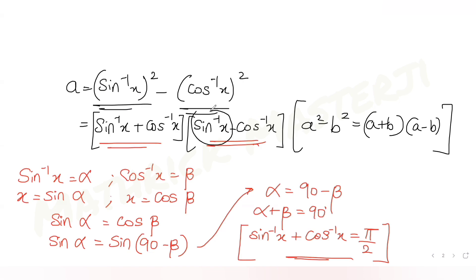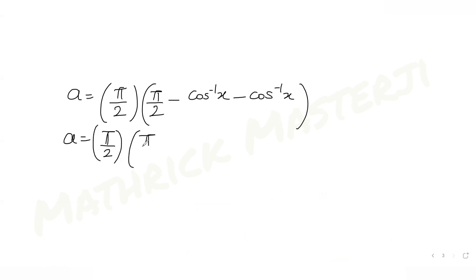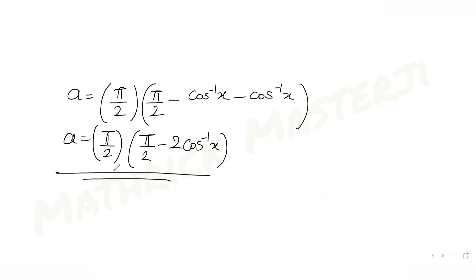So a becomes (π/2) multiplied by (sin⁻¹x − cos⁻¹x). I can write sin⁻¹x as π/2 − cos⁻¹x, giving (π/2 − cos⁻¹x − cos⁻¹x), which simplifies to a = (π/2)(π/2 − 2cos⁻¹x). Now I know from trigonometric identities that 2cos⁻¹x can also be written as cos⁻¹(2x² − 1).